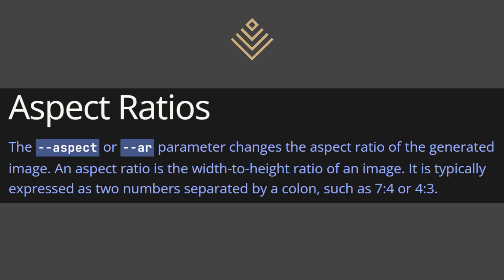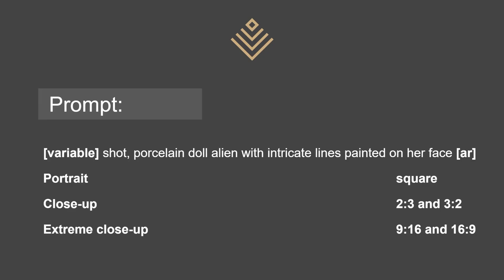So I'm just picking a couple of common ones. Here's the prompt: variable shot porcelain doll alien with intricate lines painted on her face, and then I'm adding the aspect ratio parameter. The variable is portrait, close-up, extreme close-up. The aspect ratios I'm looking at are square, 2:3, 3:2, 9:16, and 16:9, which is the widescreen aspect ratio.